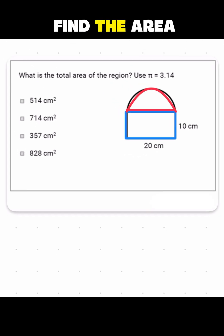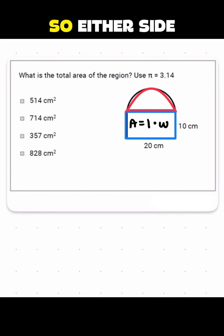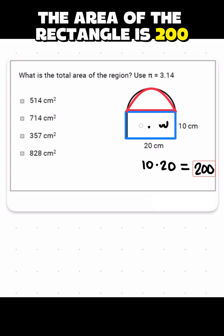So first, to find the area of a rectangle, area of a rectangle is length times width. Either side could be the length or the width. So you're just doing 10 times 20. That's going to give you 200. So the area of the rectangle is 200.